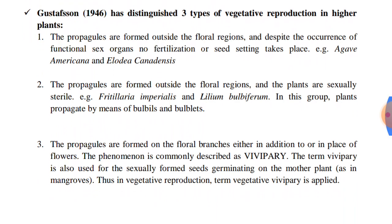The second category: the propagules are formed outside the floral regions and the plants are sexually sterile. In category 1 there are functional sex organs but fertilization does not take place, while in category 2 the propagules are formed outside the floral regions and plants are sexually sterile. For example, Fritillaria imperialis and Lilium bulbiferum. In this group, plants propagate by means of bulbils and bulblets.